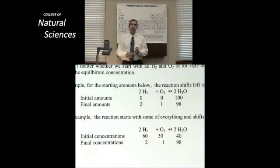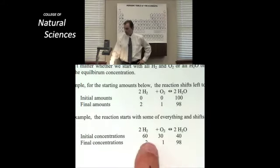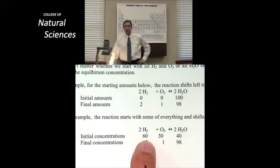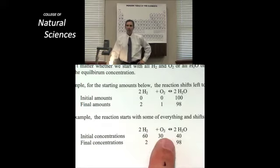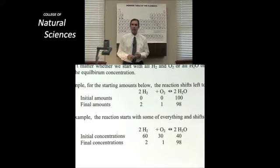Let's start all over again and let's do some entirely new combination of stuff in the container. This time in my container, I'm going to put 60 hydrogens, 30 oxygens and 40 waters. And I'm going to say ready, set, go. And I'm going to let that reaction happen.